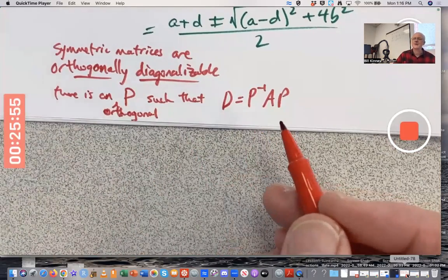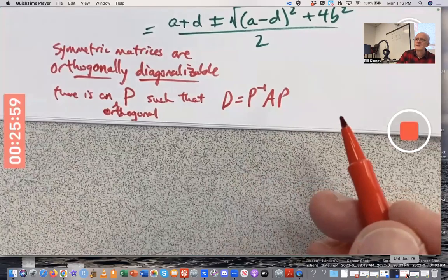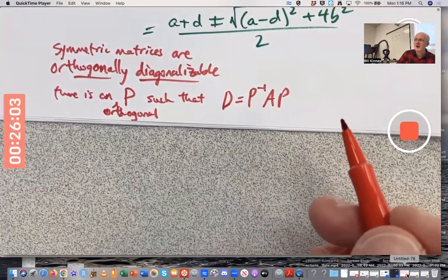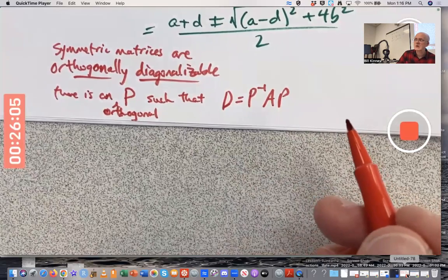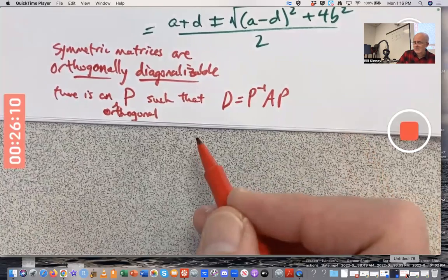Wait, but wait a minute. We never talked about orthogonal matrices yet. Talked about orthogonal vectors. Right? Orthogonal vectors are vectors that are mutually perpendicular. Their dot products are zero. What's an orthogonal matrix?